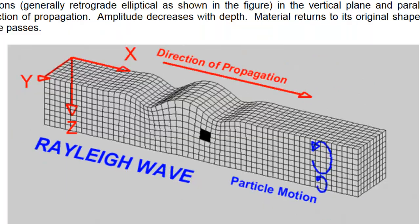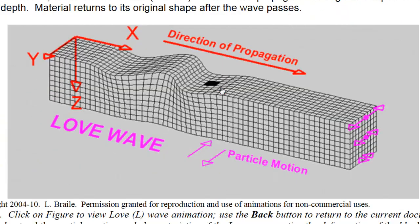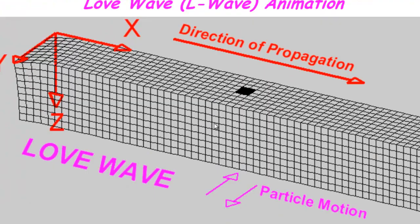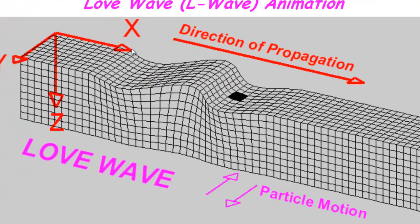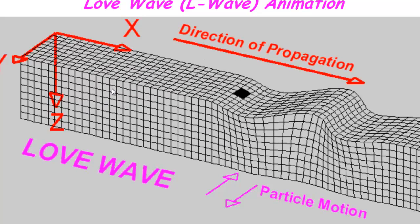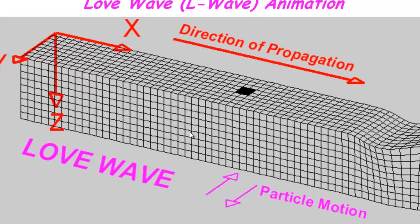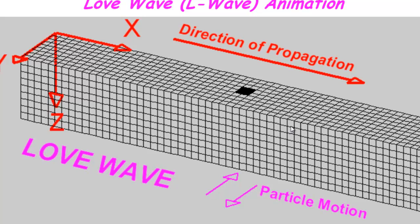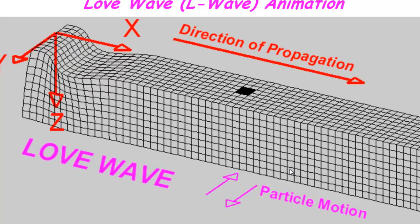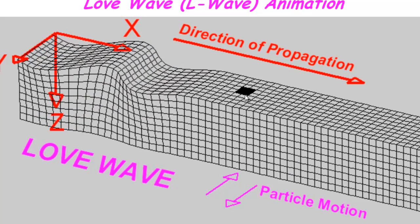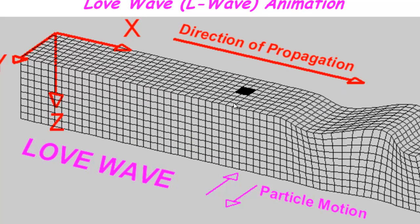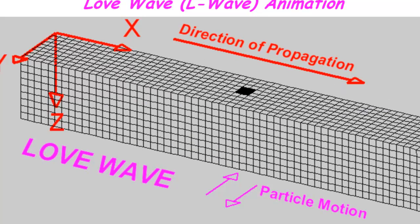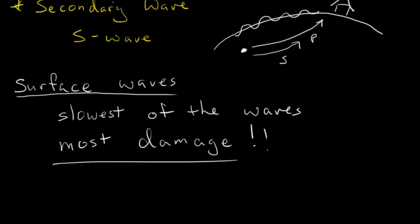The other type of surface wave is called a love wave. The love wave zigzags left and right along the Y axis. You can see the particle motion going left and right relative to the direction of travel.